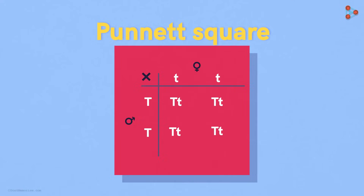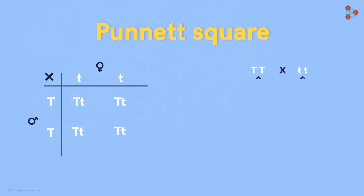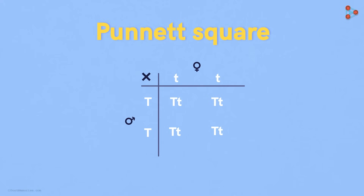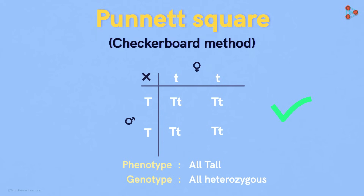Please understand this well because it's going to help us a lot in the future. Now, if we compare the simple cross that we usually carry out, notice that the results are exactly the same. All the plants in the F1 generation are tall and have the same genotype — they are all heterozygous. This confirms that our cross is correct. A glance at the presentation of this cross hints at one more name for it: this technique is also referred to as the checkerboard method.